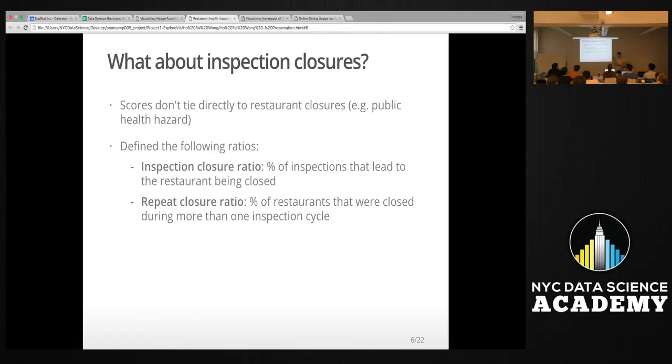So I wanted to see if I could differentiate boroughs or neighborhoods or cuisines by closure. So I defined two ratios. First being the inspection closure ratio, meaning for a given inspection, what's the percentage chance that it would lead to closure of the restaurant? And the next is the repeat closure ratio. So if restaurants that closed once, what are the odds that during a subsequent inspection cycle they would be closed again? So repeat offenders, you know, not learning their lesson the first time around.